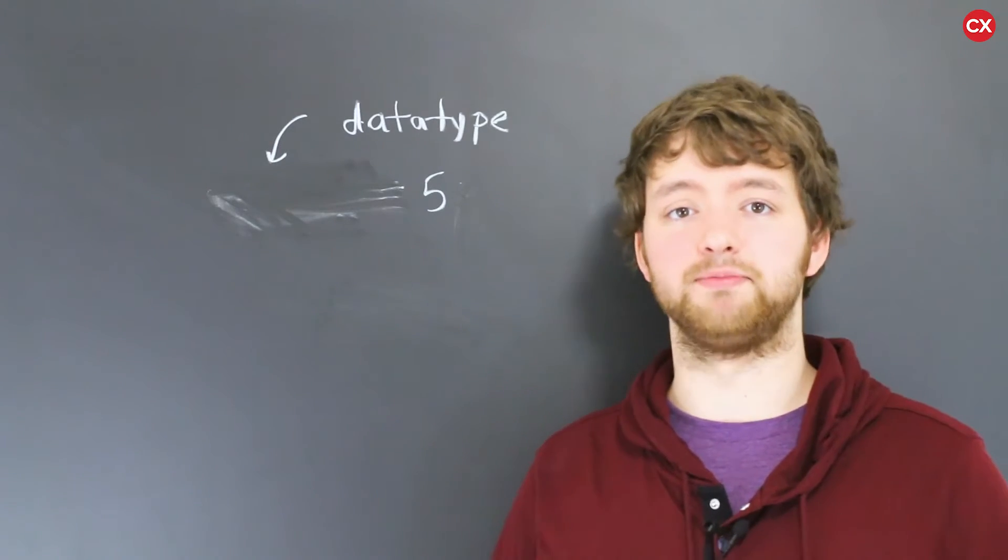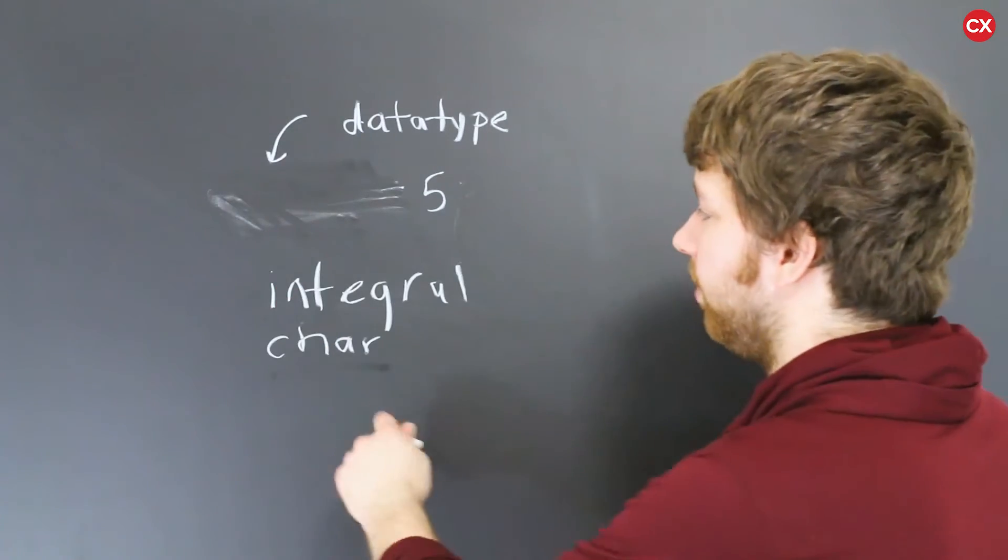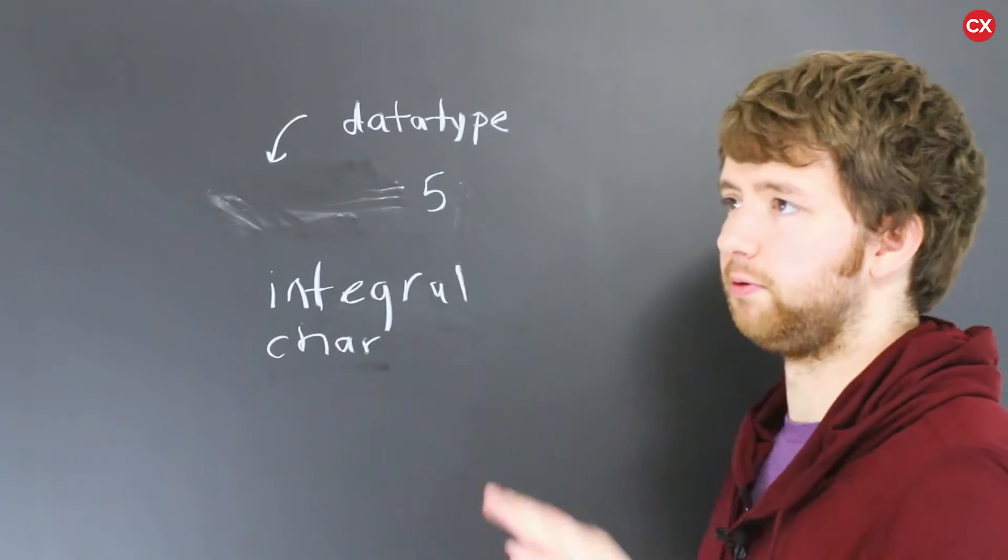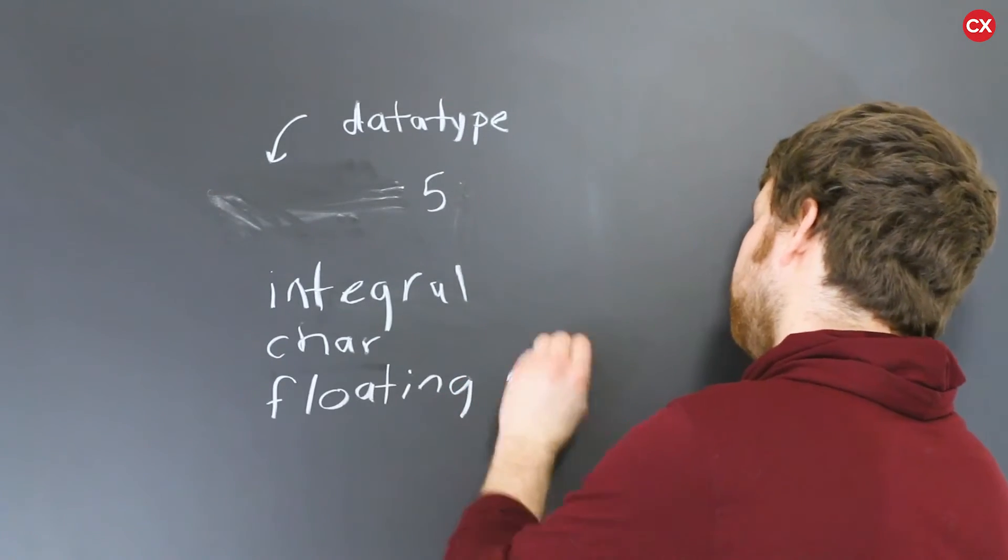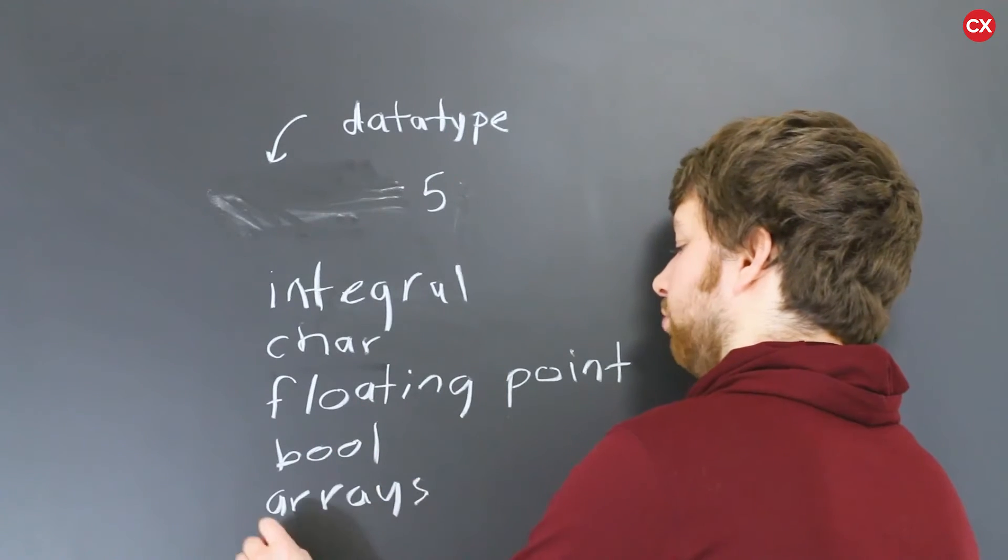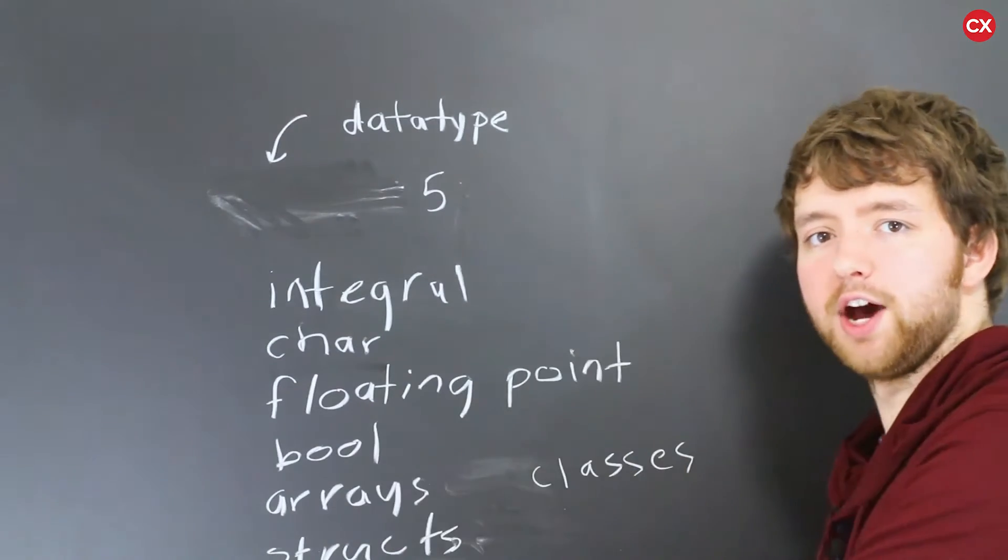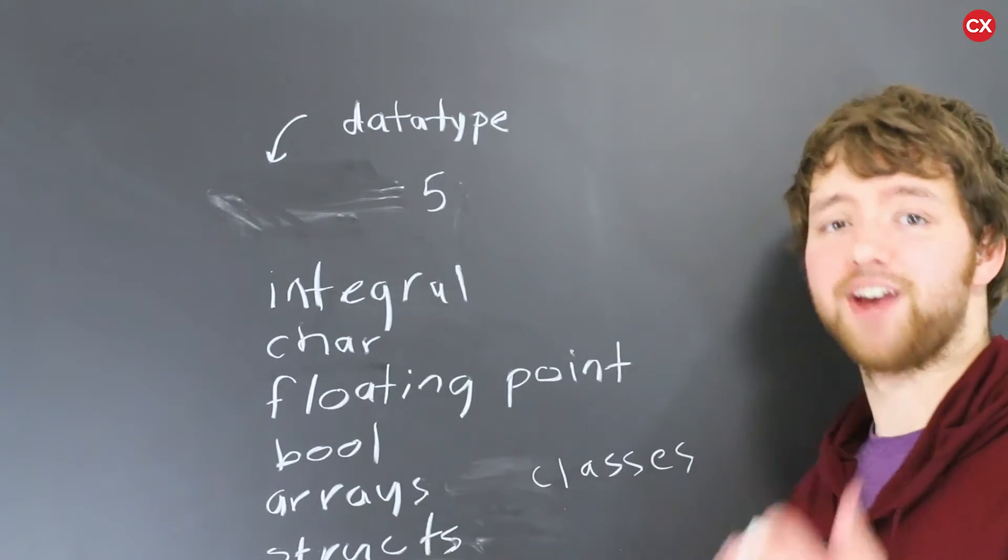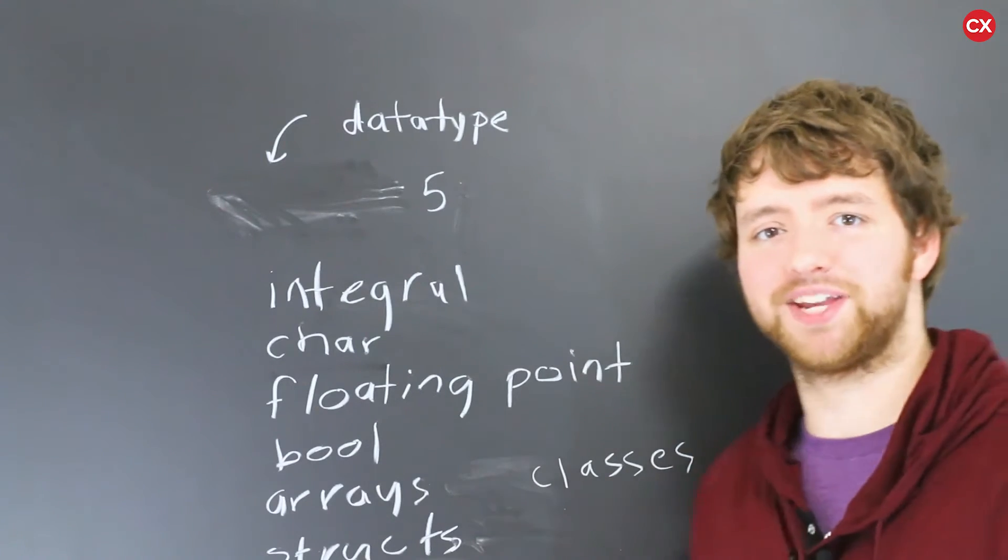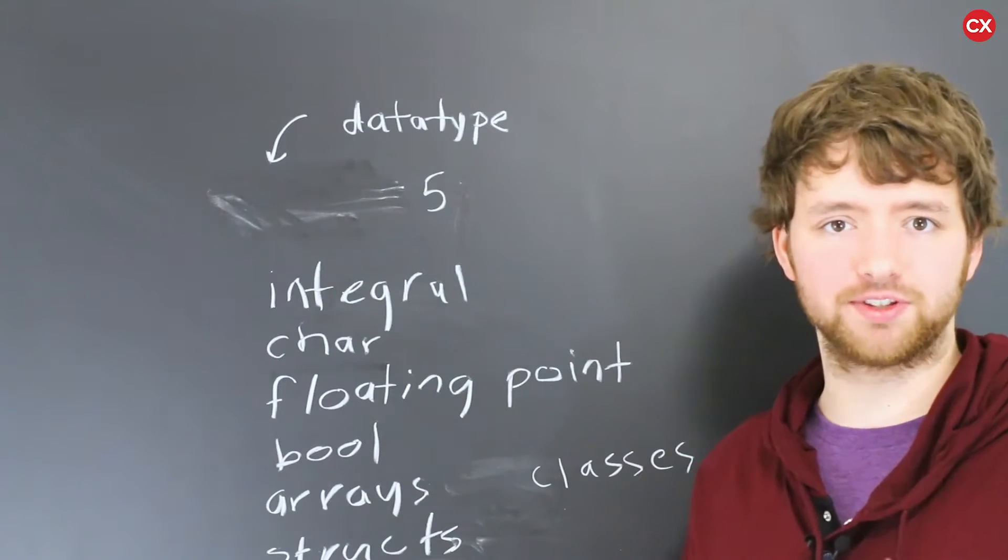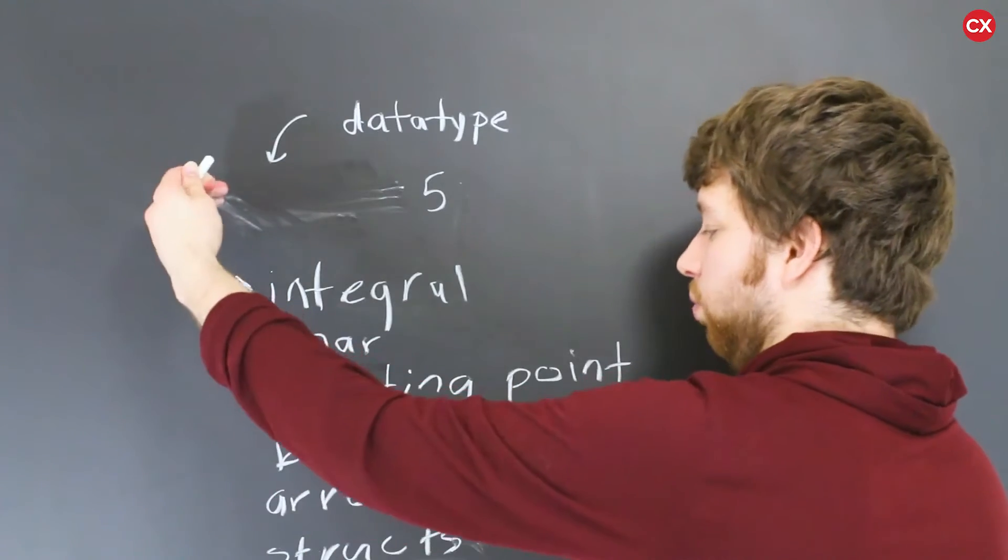Well I like to categorize things it helps me learn so I'm going to categorize it into integral, char which you can argue might be part of integral but just follow along, and floating point. You also have bool or boolean, you have arrays, you have structs, we also have classes and you can see there are a lot of data types. There are also things like vectors pointers unions enumerations, there are a ton of data types. So what exactly do you need to focus on is the question. Well we're going to start here at the integral data types and we're going to kind of work our way down in this list.